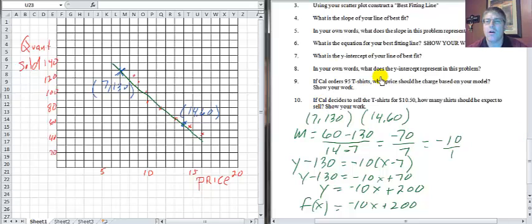We can use our equation to answer the other questions. The y-intercept represents when x is 0. That means when we give the shirts away, we can anticipate selling about 200 shirts or giving them away.